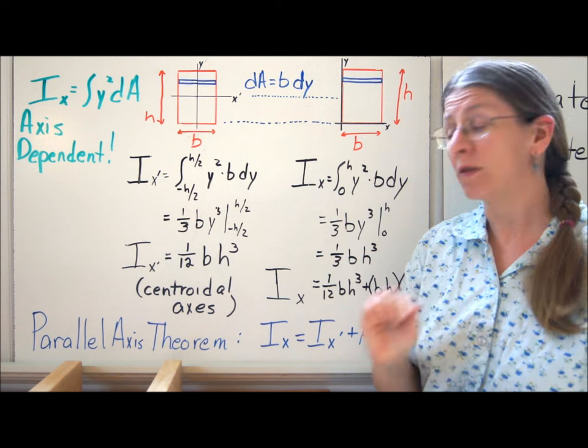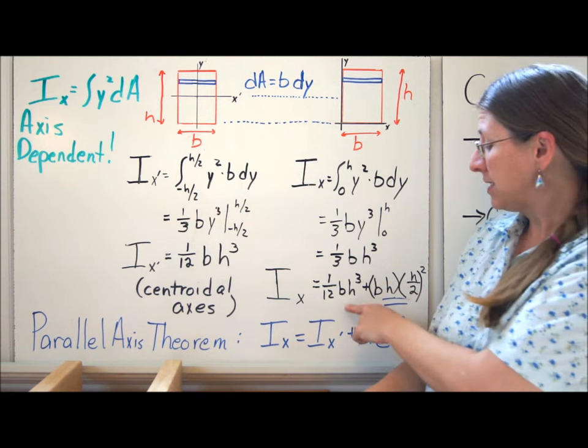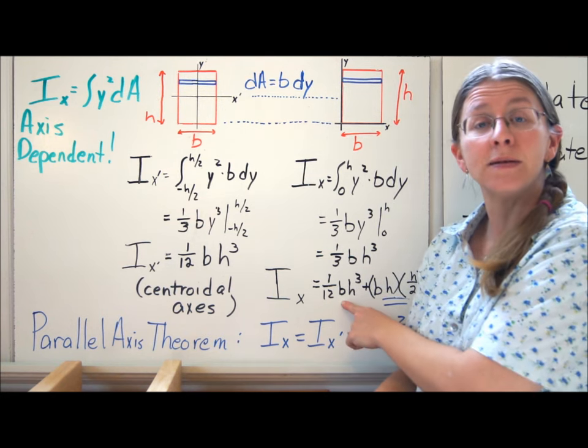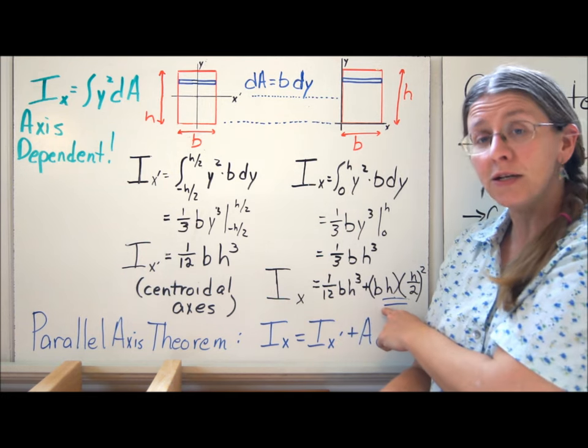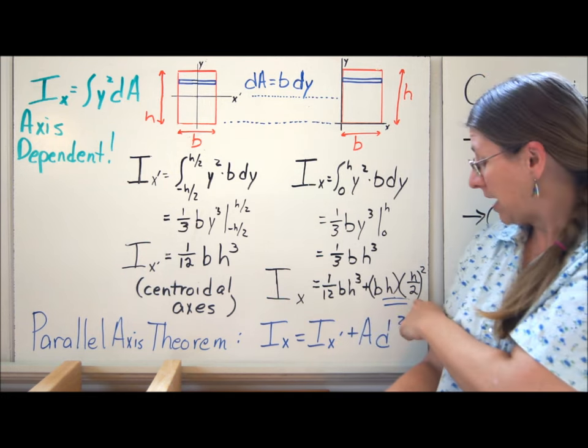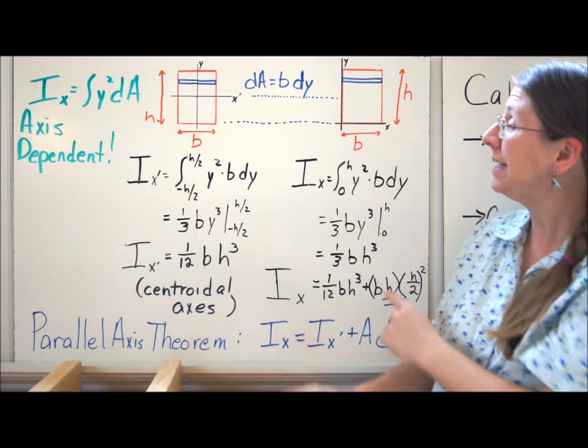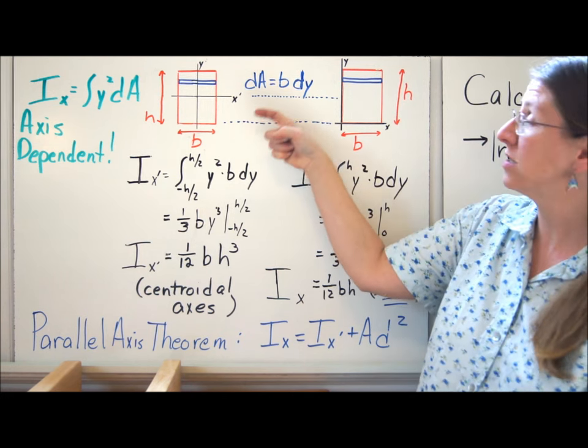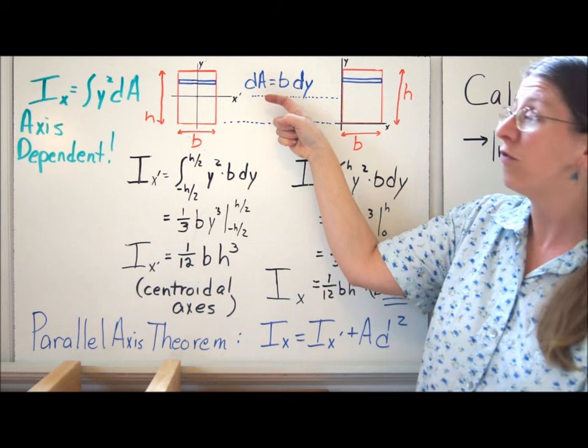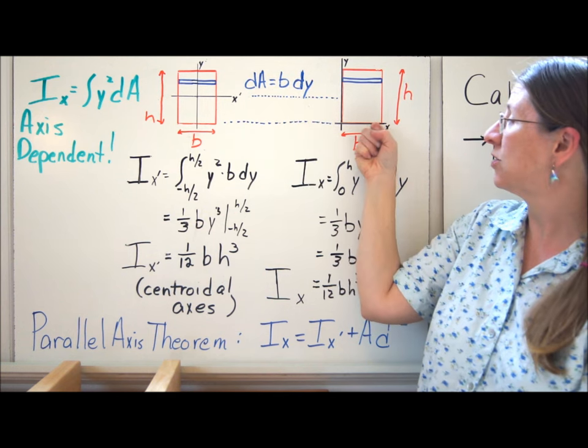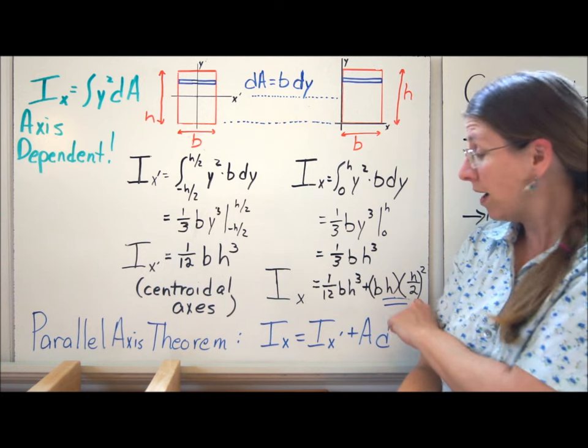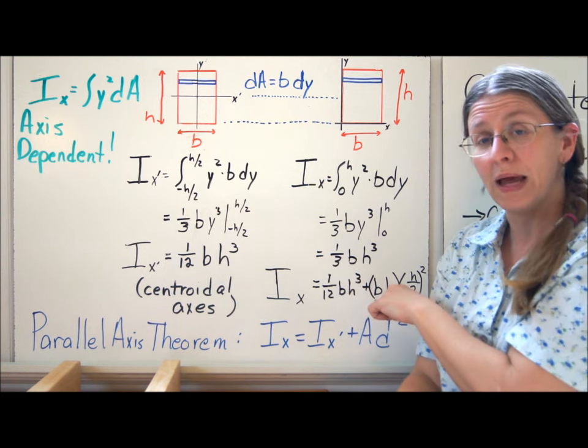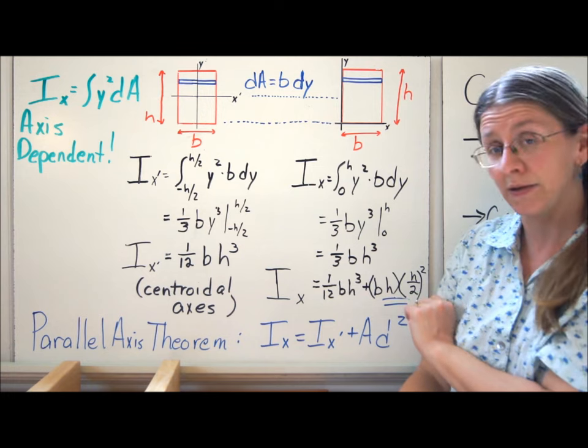But what I can say is with the parallel axis theorem, this is 1 twelfth bh cubed, that's the centroidal axis one over here, plus bh, that's A, times d squared. d is the distance from one axis to the other parallel axis, from the centroid to the axis you're talking about here. So I can say bh times h over 2 quantity squared, and that gives you exactly what we had before. That's the parallel axis theorem.